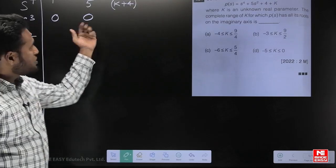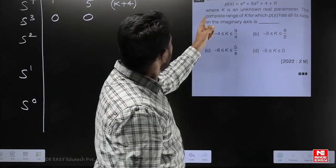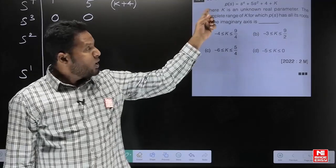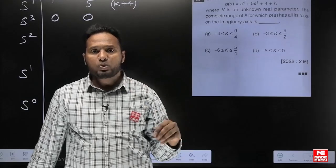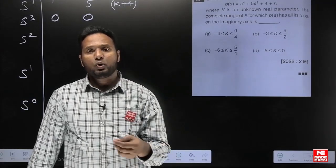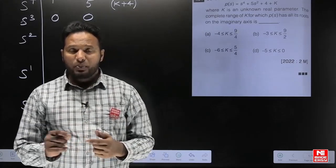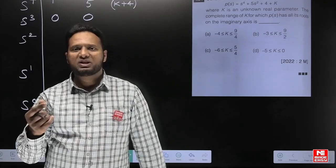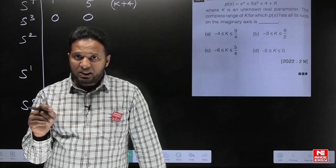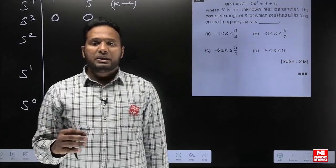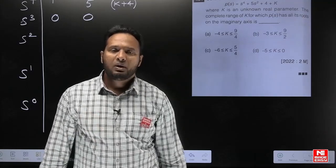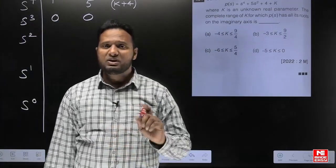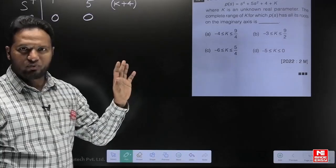A row of the Routh array is becoming zero completely. The question asks for all roots of this fourth-order polynomial to be on the j-omega axis. For a fourth-order polynomial, all four roots must be on the j-omega axis. This is possible only when the s³ row becomes zero completely, because when a row becomes zero, that row's index plus one roots are symmetric to the origin. So for 4 roots to be symmetric, the s³ row must be zero, and there must be no sign changes in the first column.